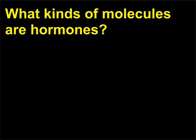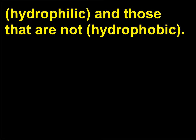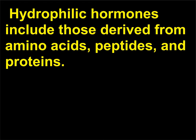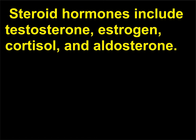What kinds of molecules are hormones? Hormones can be divided into two broad groups: hydrophilic and hydrophobic. Hydrophilic hormones include those derived from amino acids, peptides, and proteins. The hydrophobic group includes steroids, which are derived from cholesterol. Steroid hormones include testosterone, estrogen, cortisol, and aldosterone.